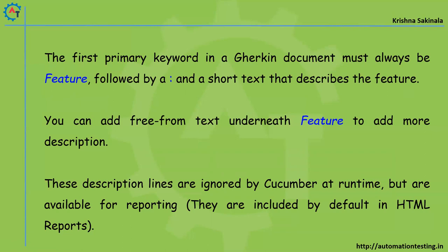These description lines are ignored by Cucumber at runtime but are available for reporting. So when executing your feature file for automation, those detailed description lines will be ignored.